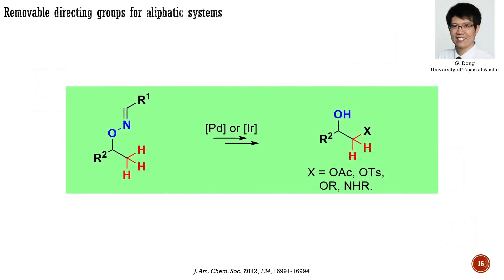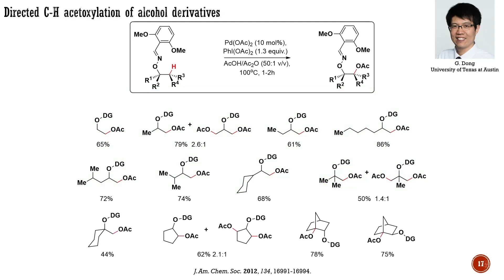The next example is the CH-acetoxylation of aliphatic alcohols developed by the group of Dong from the University of Texas. They applied derivatives of hydroxylamine as a removable directing group for the functionalization of aliphatic systems. With the directing group presented here, they examined several oxidative CH transformations enabled by palladium catalysts. For CH-acetoxylation, the best catalyst was found to be palladium acetate combined with stoichiometric quantities of a hypervalent iodine reagent, phenyliodine diacetate, which acts as a source of acetate and an oxidizing agent. The reaction operates on both acyclic and cyclic alcohol derivatives.